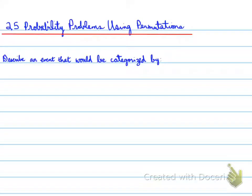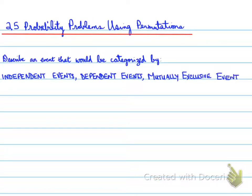2.5 Probability Problems Using Permutations. What I want you to be able to do as part of understanding this whole unit is you should be able to describe an event that would be categorized by independent events, dependent events, mutually exclusive events, and complements. If you are able to identify the independent, dependent, mutually exclusive event, and the complement, that's an important understanding of the definitions we have studied up until now.